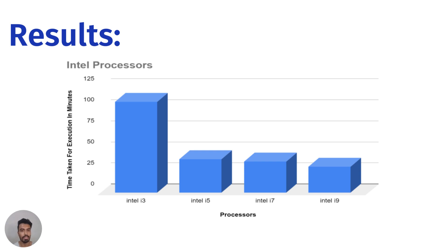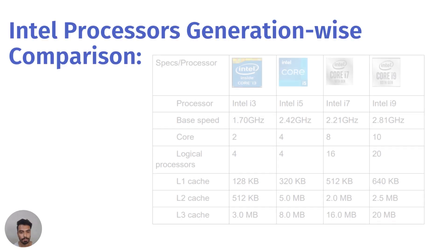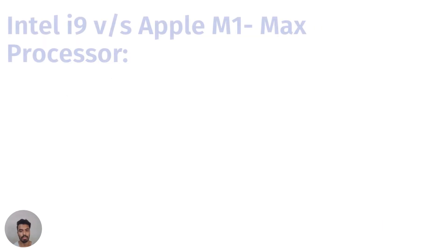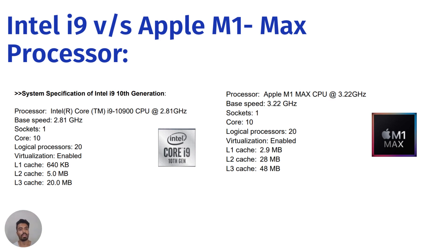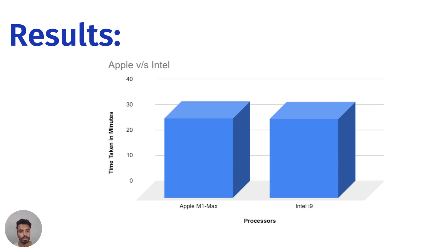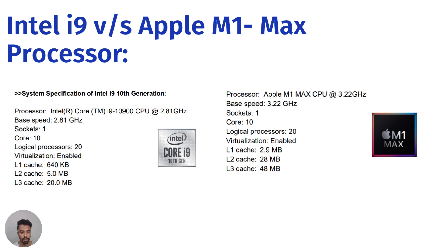The i9 outranked all lower generation processors because of its higher L1 cache and higher clock speed. L1 cache is also considered as RAM for the processor. The L1 cache of Core i9 is greater than all other processors' L1 cache sizes. Next, we compared the results for the i9 processor versus the Apple M1 Max processor, and you can see the system specifications of both.